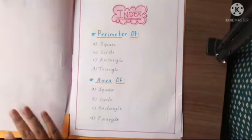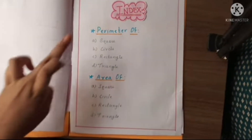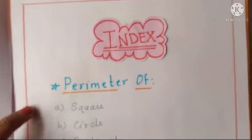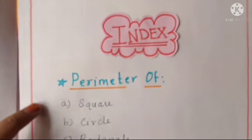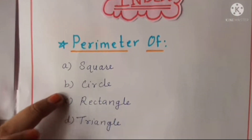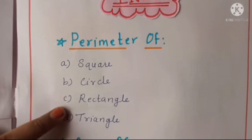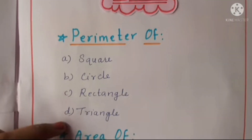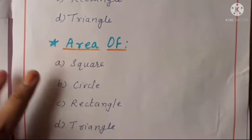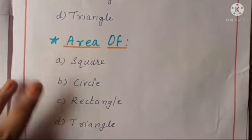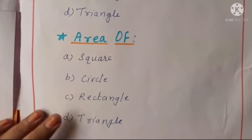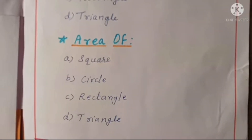Here is the index: perimeter of square, circle, rectangle, and triangle; area of square, circle, rectangle, and triangle.